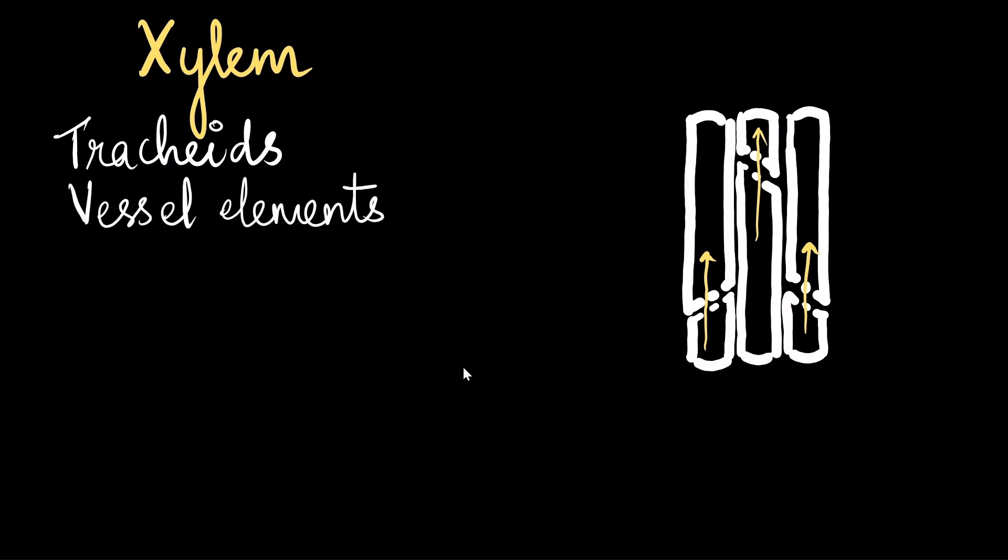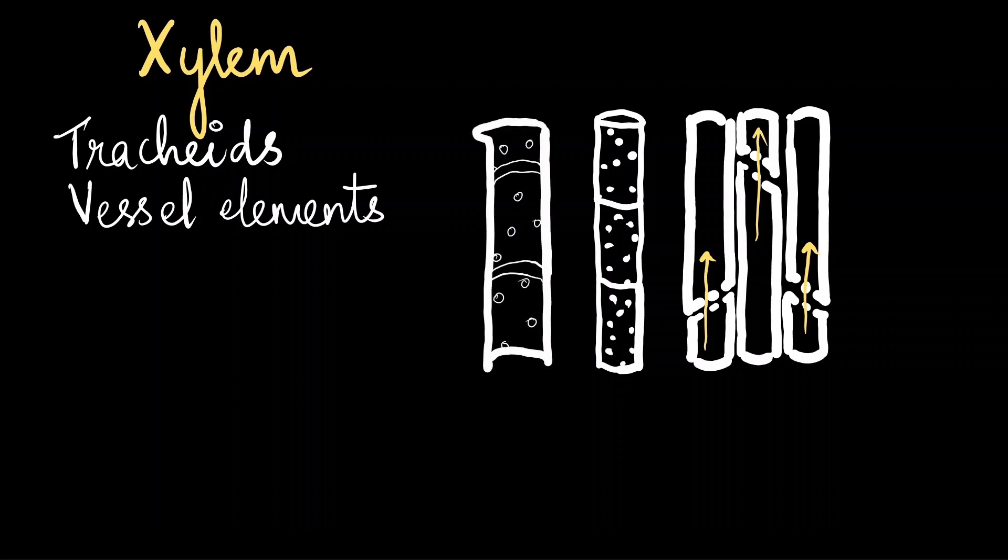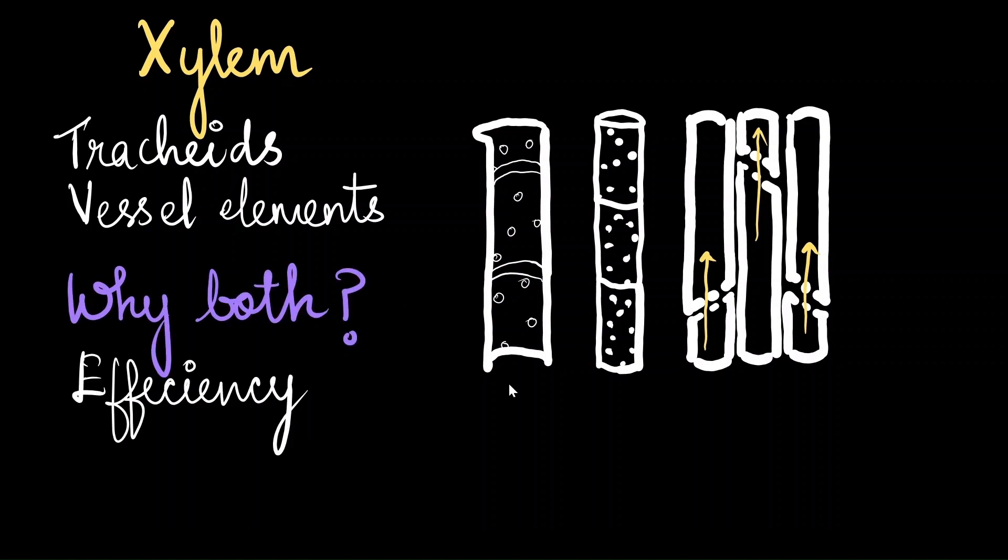Next, we have the vessel elements. Vessel elements are like the upgrades that the tracheids got. Imagine you have a series of garden hoses and you are connecting them together but to make it more efficient, you remove the connection portion so it looks like one single huge garden hose. Now, that is vessel elements for you. From the outside, they do look like individual cells that are stacked one on top of each other. When you look on the inside, we can see that the connecting horizontal plates have been removed. So this makes for a more efficient water transport system. Now, why does the plant have two cells which do almost the same function? Because it's more efficient to have two systems which do the same function rather than one because one can compensate for the other in case of structural issues and the other is an adaptation. So, depending upon the climate and what the plant is going through, they can depend on one type of element or the other.